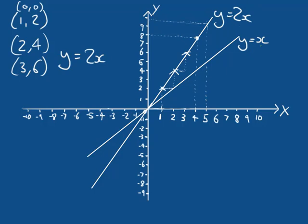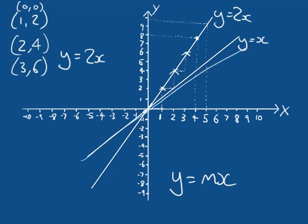What if we had gradient M equals 4? That gives the equation Y equals 4X. Plotting a few points: if X equals 0, Y equals 0; if X equals 1, Y equals 4; if X equals 2, Y equals 8. Joining these up gives a line Y equals 4X, and we can see the angle is greater with a gradient of four than with a gradient of two, which is itself greater than with a gradient of one.